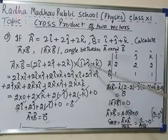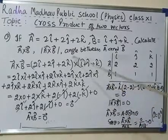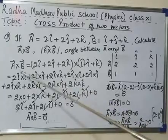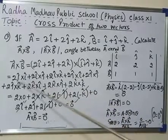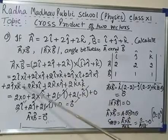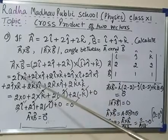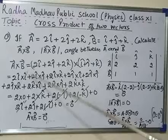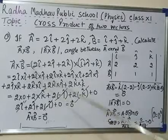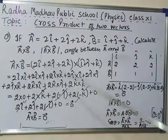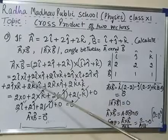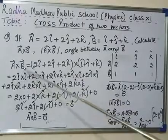It means 2k cross j cap plus 2k cross k cap. Now here, as we know that the vector product of two equal vectors is always 0. It means i cap cross i cap is equal to 0, j cap cross j cap is equal to 0, k cap cross k cap is 0.